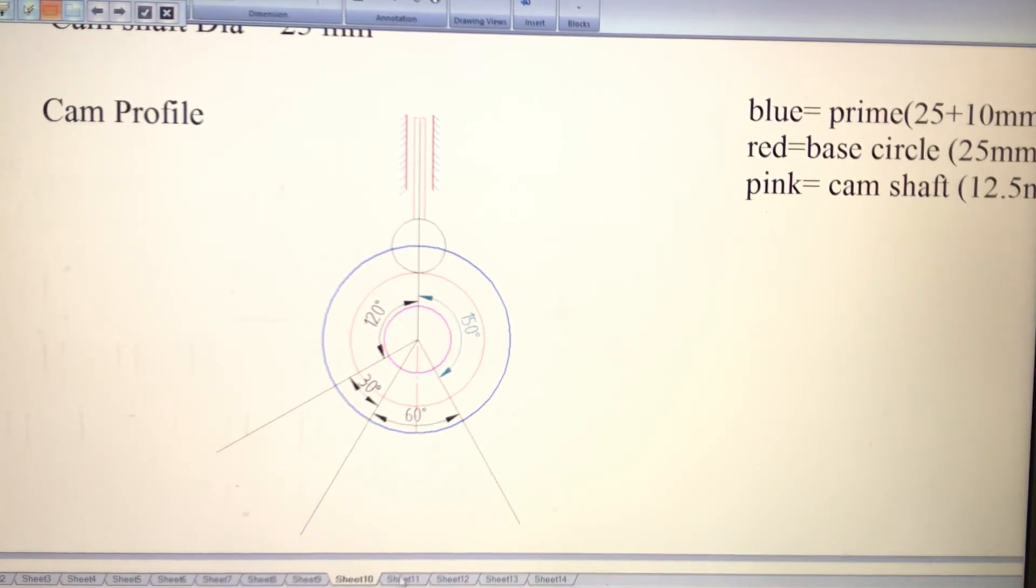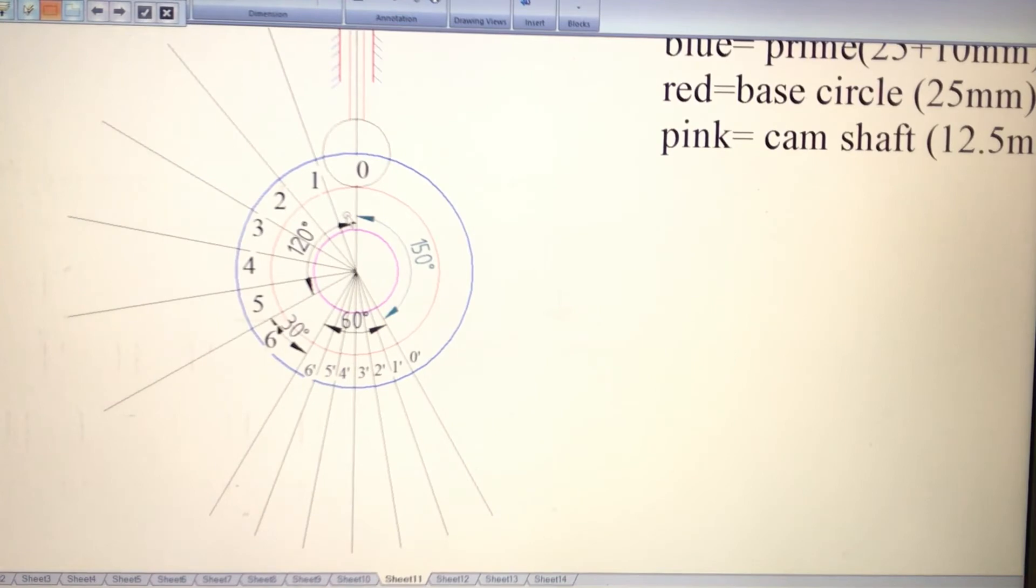In the next step, you divide the angle of rise into six equal parts, because in the displacement drawing we divided it into six equal parts. That means this 120 degrees into six equal parts, that is 20 degrees each. Using your protractor, divide this angle of rise into six equal parts and draw the lines.